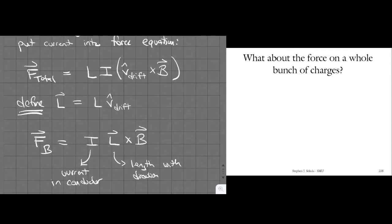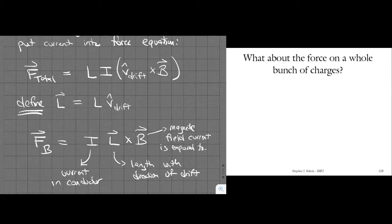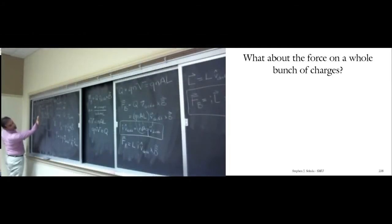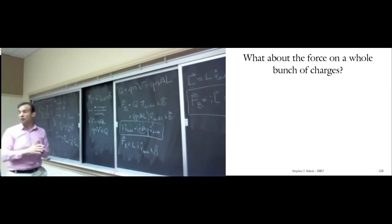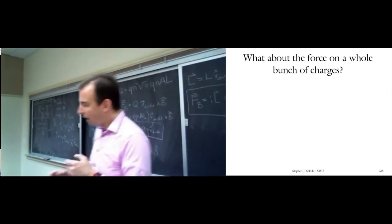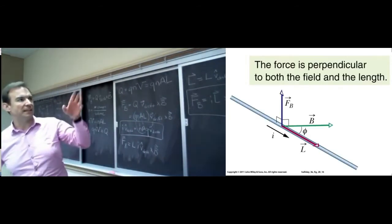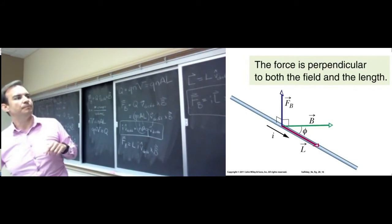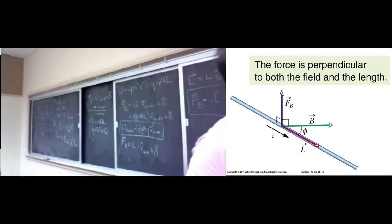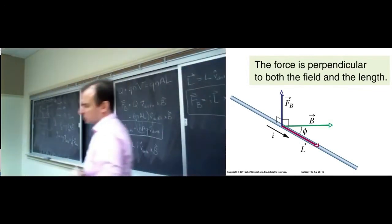If you know the current passing through a conductor, its length, the direction charge is drifting, and the magnetic field, you can calculate the force on the entire conductor — not just individual charges but the whole thing. To find the direction: point your fingers in the direction of drift velocity, curl toward B, and your thumb indicates the direction the force on the conductor points. The direction of L-vector is just the direction current flows.